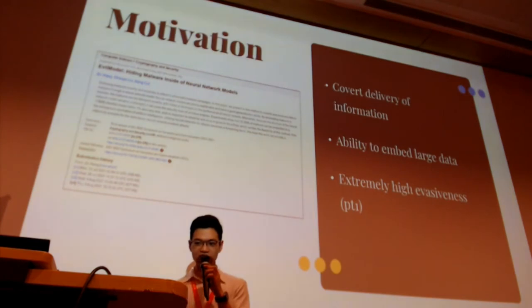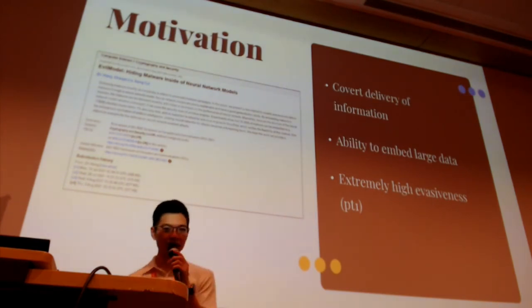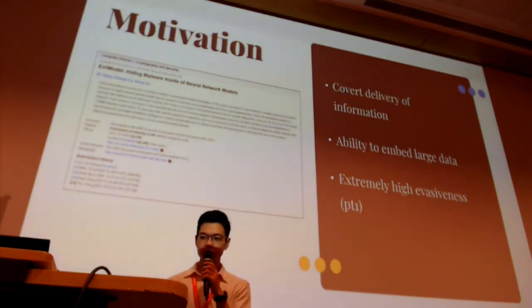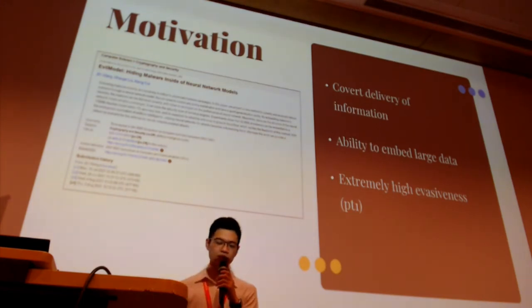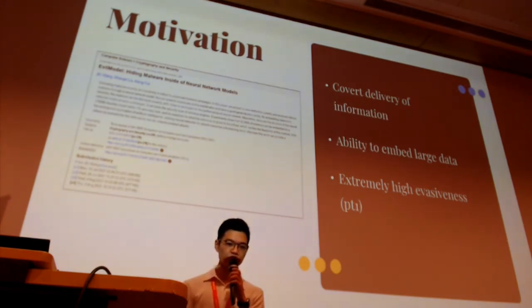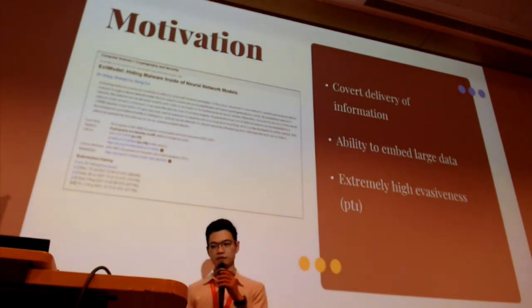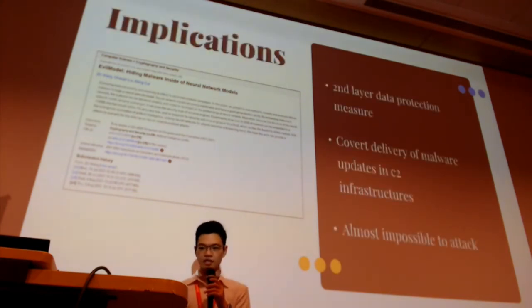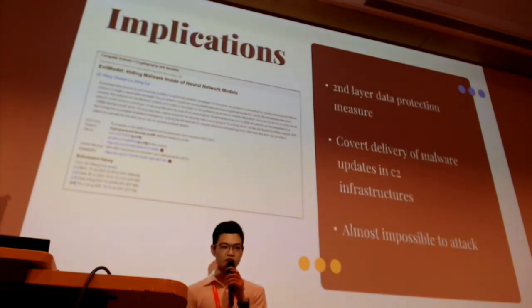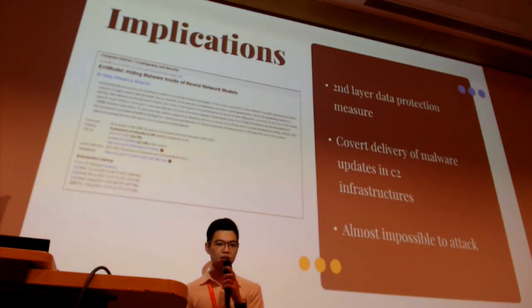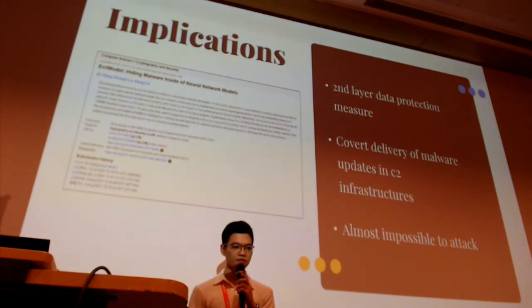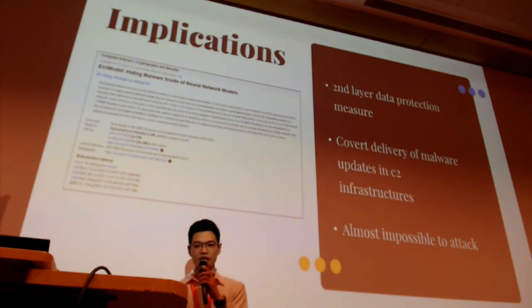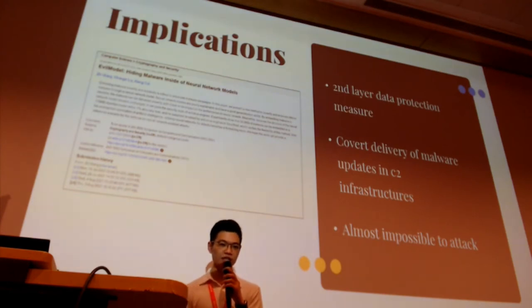This is the motivation of the project — EvoMoto, a paper by these individuals. What we want to achieve: firstly, covert delivery of information. Next, the ability to embed large amounts of data, which was previously impossible with images. And lastly, an extremely high level of evasiveness against anti-malware programs — because remember, our context for this is malware. Some indications and use cases of this attack vector: it can be used as a secondary data protection measure, whether for covert communications or the transmission of malware update files, and most commonly, for the covert delivery of malware in C2 architectures.